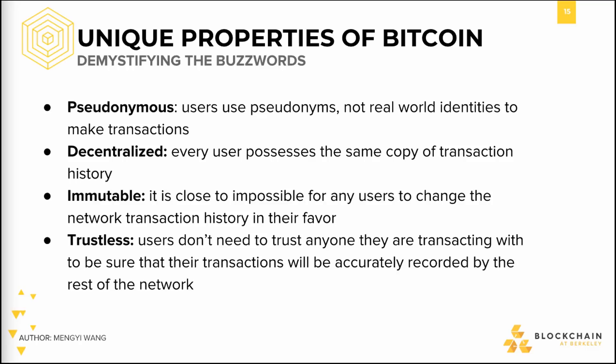Decentralization refers to taking an activity that is typically performed by one central entity and repeating the storage of information and computation among more than one party. Bitcoin achieves decentralization by having every single participant on the network store the full history of transactions. This way, every user possesses a copy of the transaction history and does not have to ask anyone else for that information.